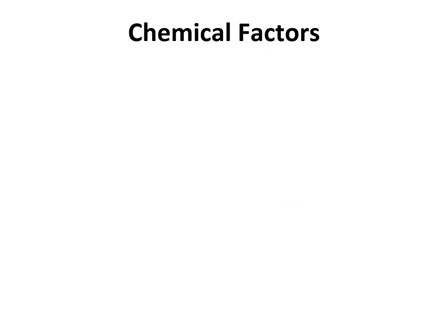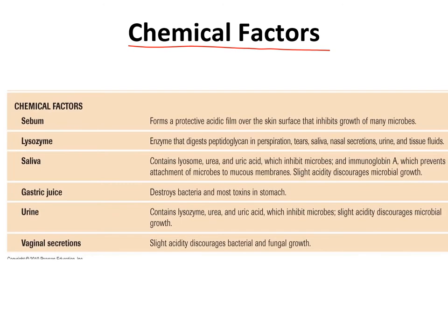So to review the physical factors: the different types of barriers — skin and mucous membranes — and various washing processes are all how your body is structured to protect you from infection. The second part of your first line of defense are chemical factors: substances that your body secretes to protect you from infection.